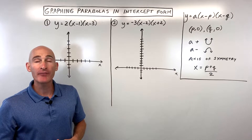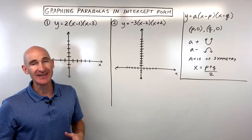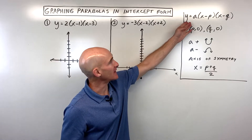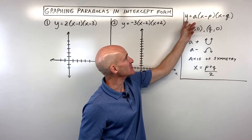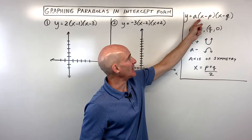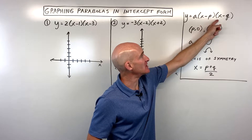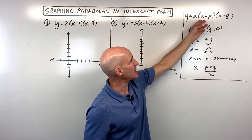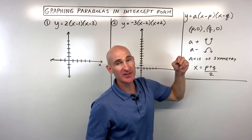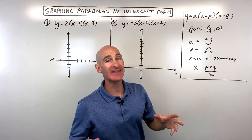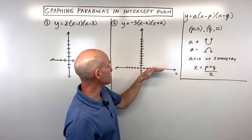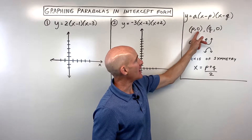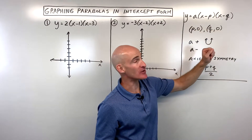In this video, you're going to learn how to graph parabolas in the intercept form. The intercept form is like a factored form: y equals a times the quantity x minus p times the quantity x minus q. By setting these factors equal to zero, you can find the x-intercepts where it crosses the x-axis. Those will be at (p, 0) and (q, 0).